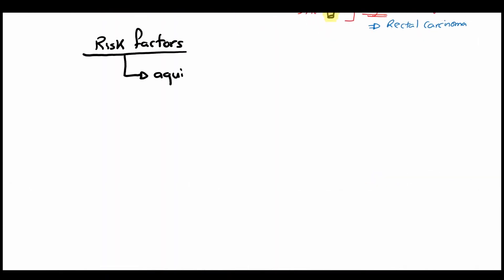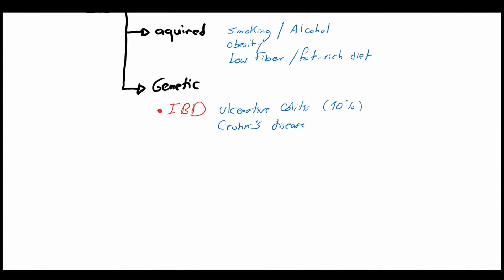First of all the acquired risk factors are smoking, excessive alcohol consumption, obesity, low fiber or fat-rich diet. Genetic risk factors include inflammatory bowel disease such as ulcerative colitis in which the lifelong probability of acquiring colorectal carcinoma is about 10%, and to lesser extent Crohn's disease.